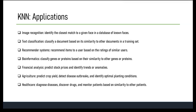KNN has various applications across many fields. In image recognition, KNN can identify the closest match to a given face in a database of known faces. In text classification, KNN can be used for sentiment analysis, spam filtering, and topic modeling — classifying a document based on its similarity to other documents in the training set. In recommender systems, KNN can recommend movies to a user based on the ratings of similar users. In bioinformatics, KNN is used for gene expression analysis and protein classification.